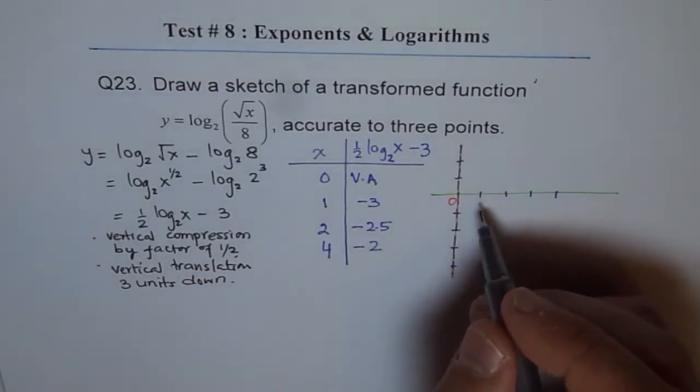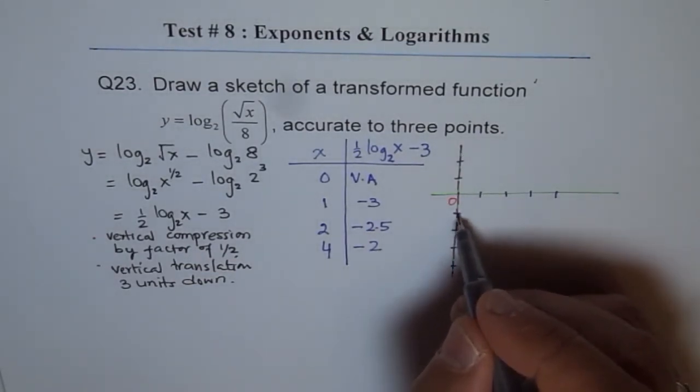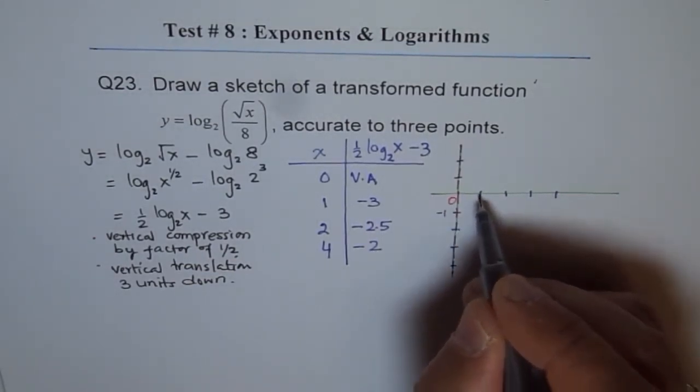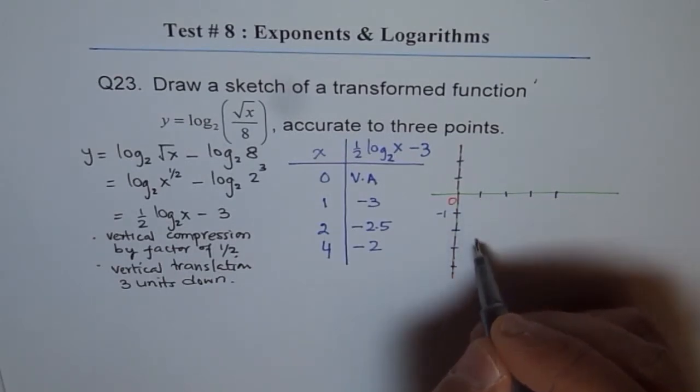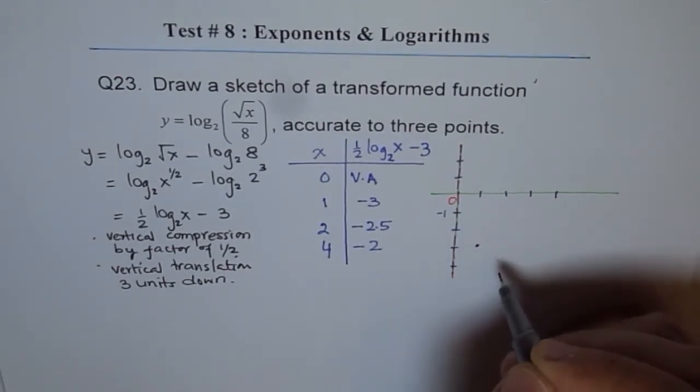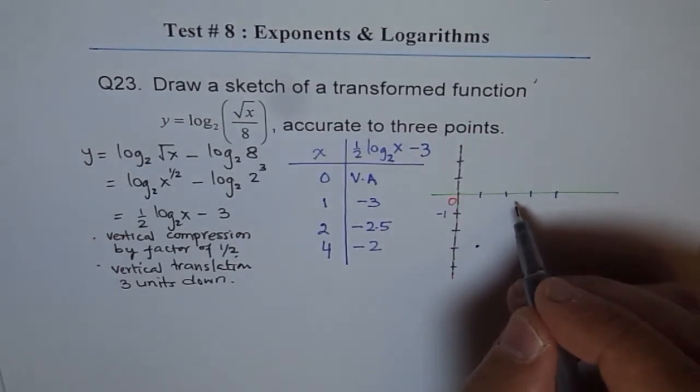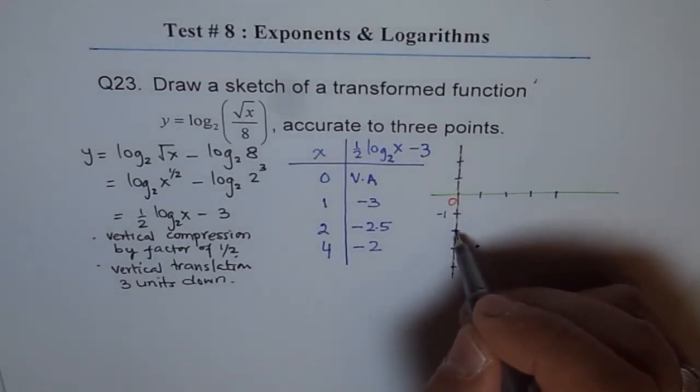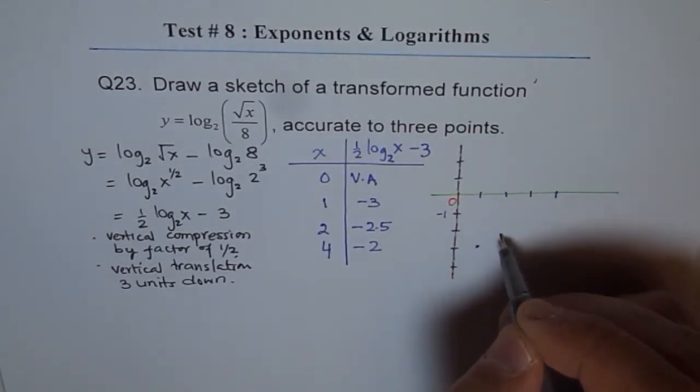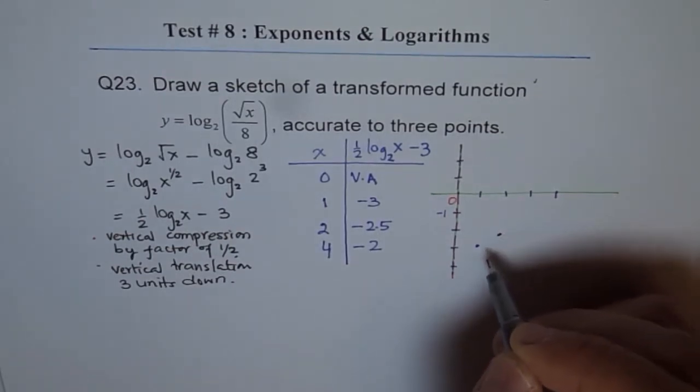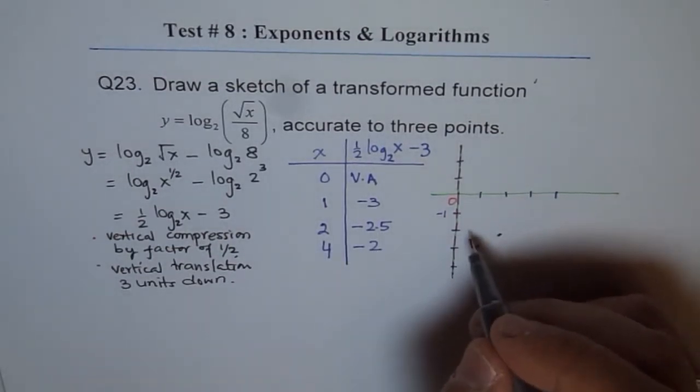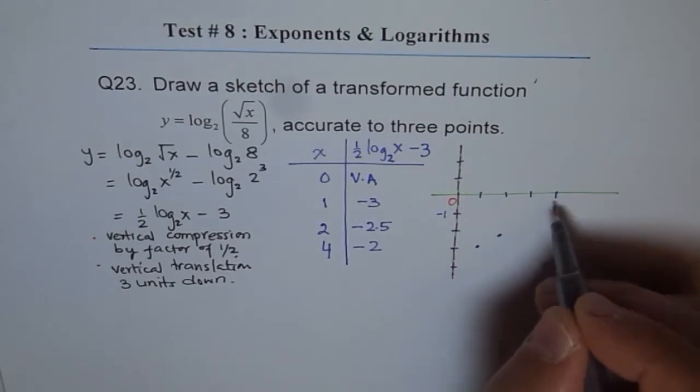So for 1, we get minus 3. So this is minus 1. So minus 3 will be here. So we get 1 point at minus 3. At 2, it is minus 2.5. So this is 2, 2.5 will be kind of here. At 4, it is minus 2. So minus 2 at 4, kind of here.